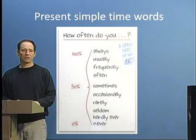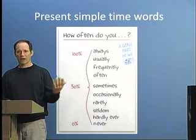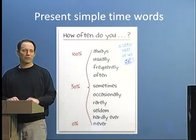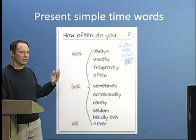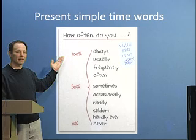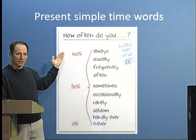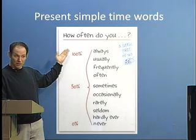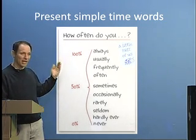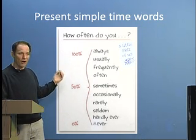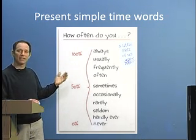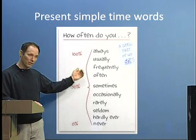For habits and things we usually do, we have certain words that mark that. Going from most often to least, we have: always, usually, frequently, and often — these give the idea of something happening more frequently.